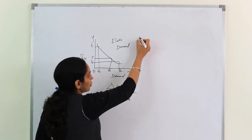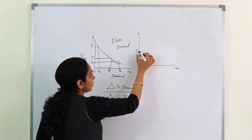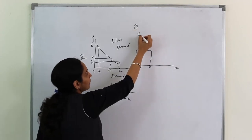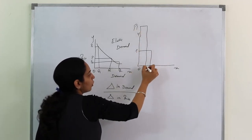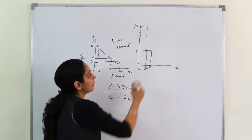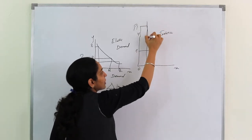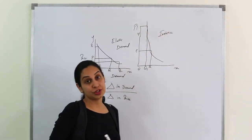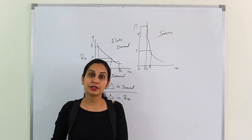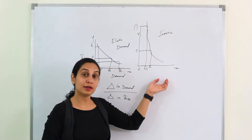Now we talk about Inelastic goods. Exactly same graph. When price P was there, quantity was Q. Prices increase to P1, but quantity has only slight impact. This is Inelastic demand. In Inelastic, the proportionate change in prices are much higher than proportionate change in demand.